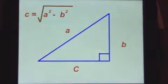We can use it to find either the longer side, as we just showed, or a shorter side. We add if we're finding the hypotenuse, but we subtract if we're finding one of the other two sides.